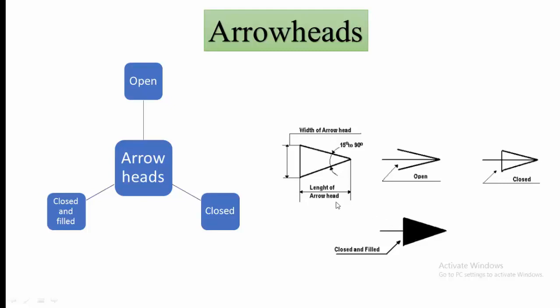But there are some techniques to draw the arrowheads. I have observed that some students made arrow very large in dimension. Or some are in very small dimension. There are some techniques. See in this diagram. It is the width of the arrowhead. And this is the length of arrowheads. The minimum dimension of angle should be 15 to 90 degree.